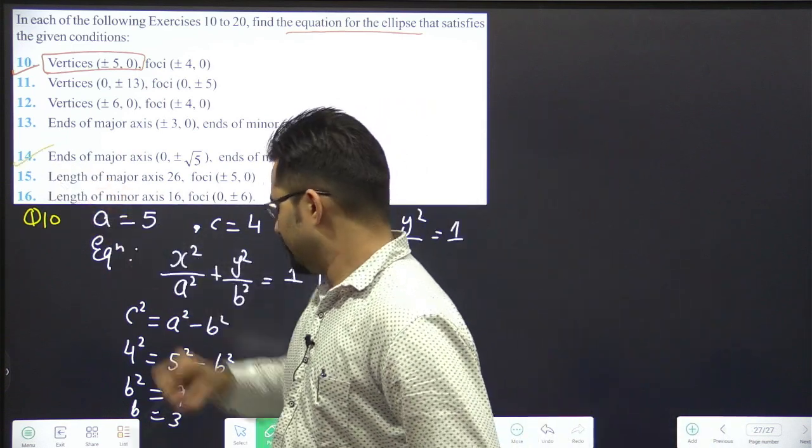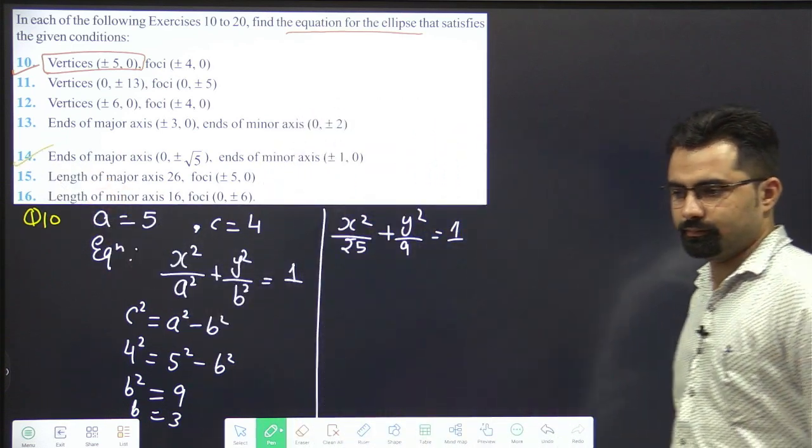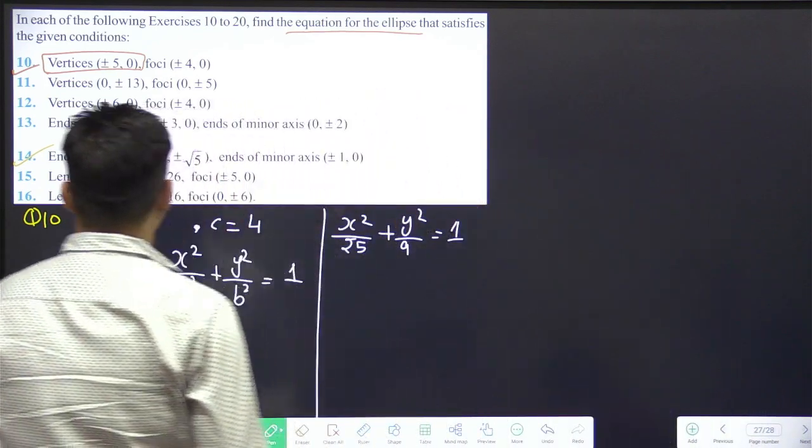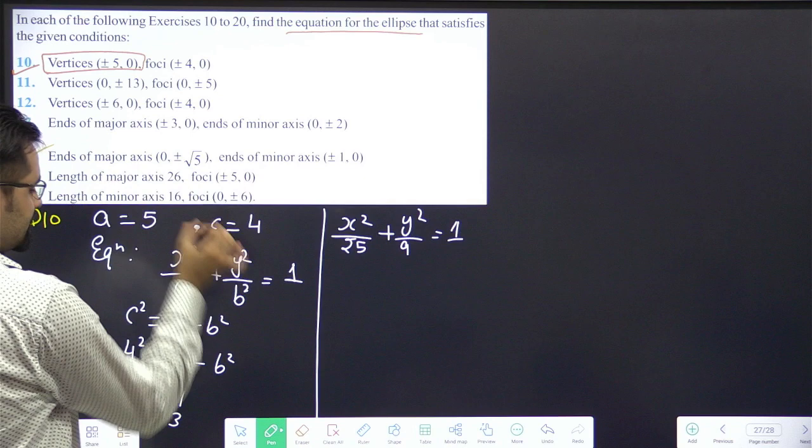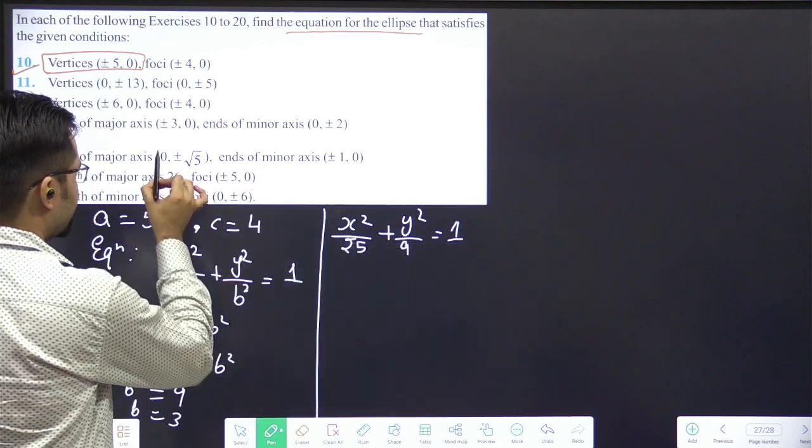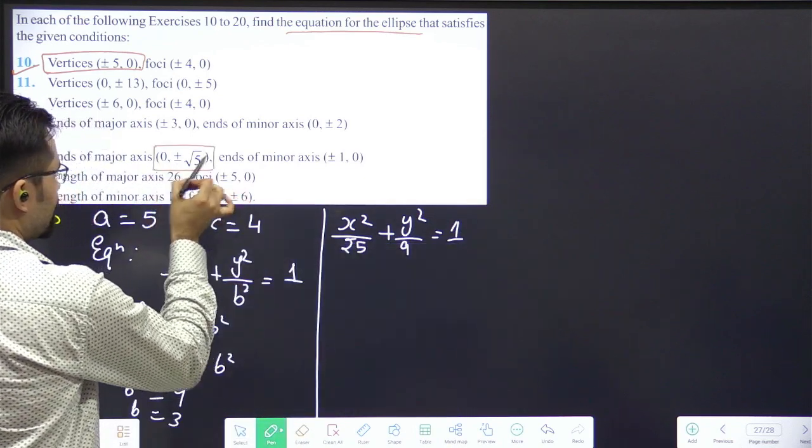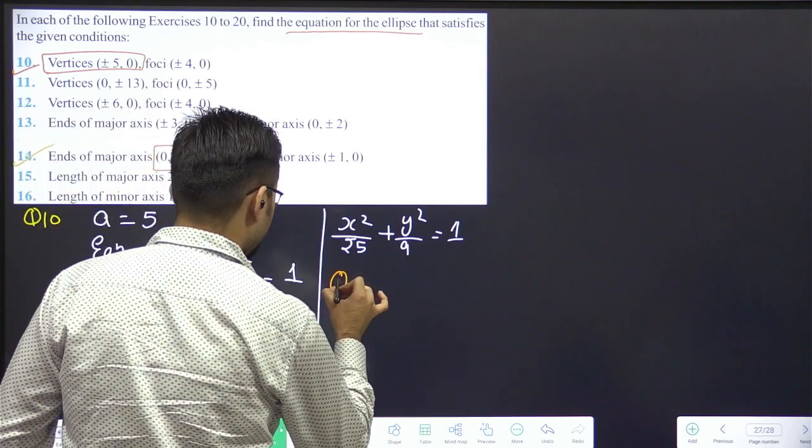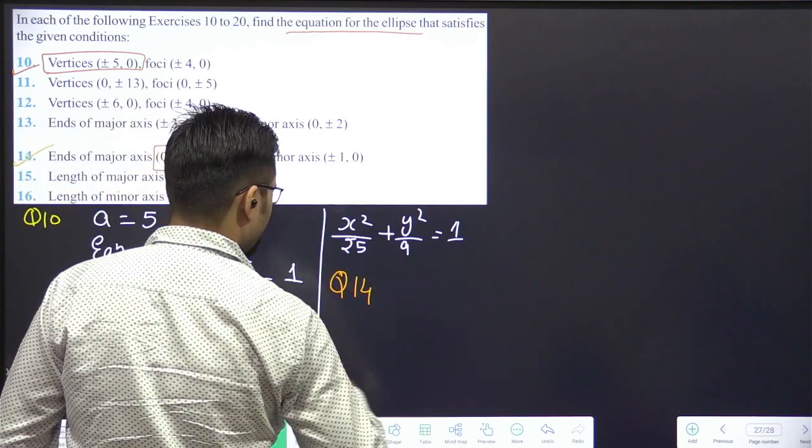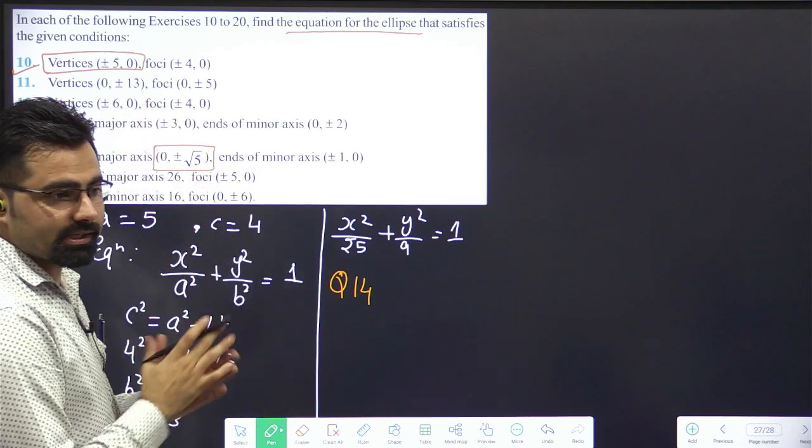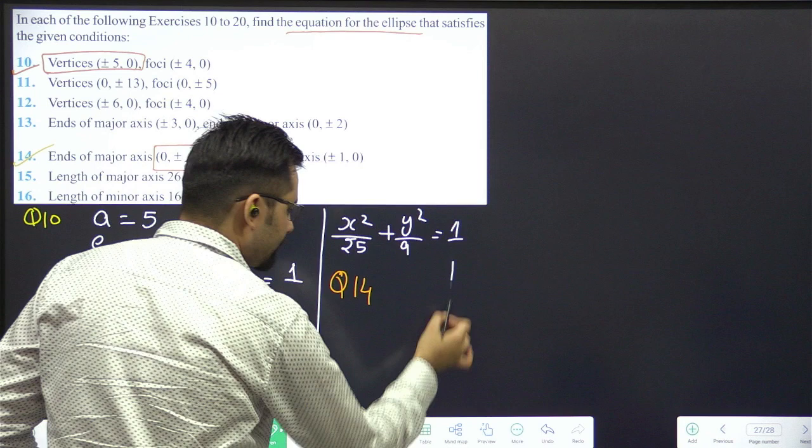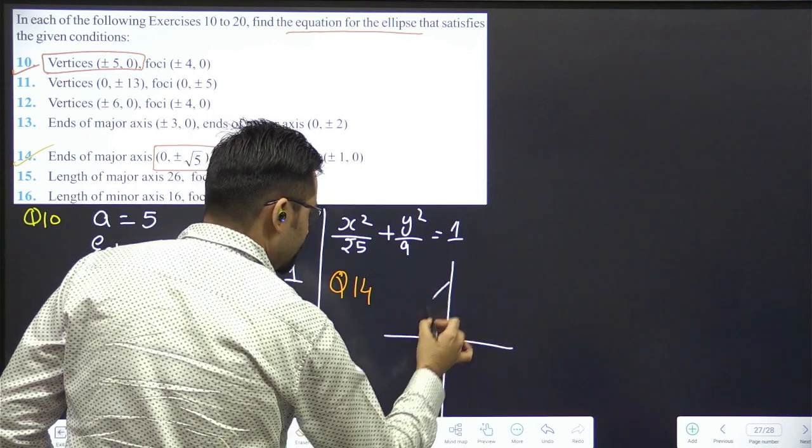Question 14. Two minutes your chance now. Ends of major axis. Major axis can be 0 plus minus root 5. Major axis is vertical. Vertical.